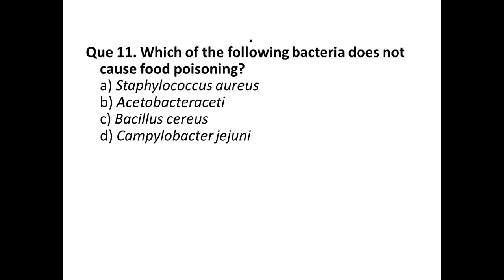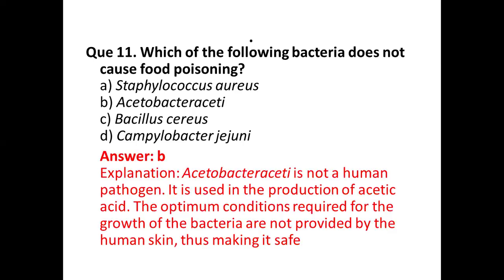Question number eleven: which of the following bacteria does not cause food poisoning? Options are: (a) Staphylococcus aureus, (b) Acetobacter, (c) Bacillus cereus, (d) Campylobacter jejuni. The correct answer is option (b) Acetobacter. Acetobacter is not a human pathogen; it is used in the production of acetic acid, and the optimum conditions for its growth are not provided by the human body. Campylobacter is the most common cause of food poisoning; others include Salmonella, E. coli, Norovirus, and Listeria.